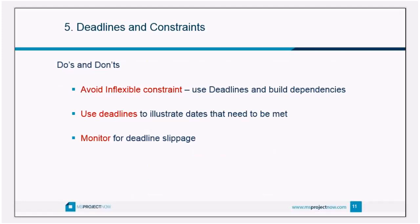We're also going to talk about deadlines and constraints. If you see a lot of warning messages from the planning wizard about scheduling conflicts, the reason is that at one point you've put a hard constraint on a task. A hard constraint — finish no later than, start no later than, must start on, must finish on — avoid those at all costs. There is a better way to show that a task or project has to finish by a particular date: use a deadline. Many people who've used Project for years aren't aware of the deadline feature.